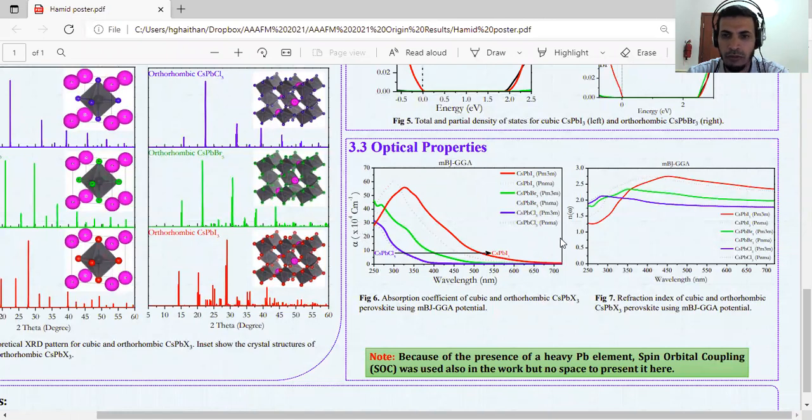we just selected absorption coefficient and refraction. As we can see, for cesium chloride shifts to cesium iodide. And also for refraction, shifted from down for cesium iodide to bromide. And the dotted lines are for orthorhombic and solid lines represent the cubic phase.